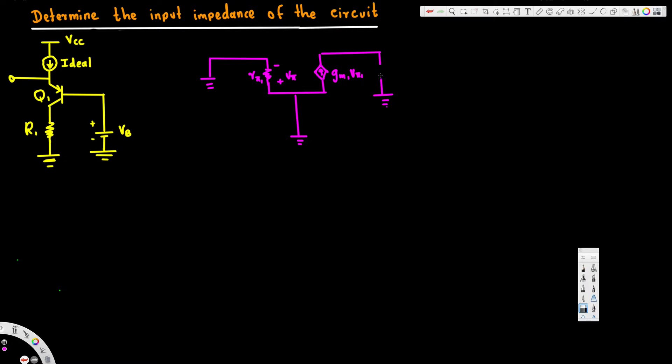And here we will have a resistor. This resistor will be r1, and the voltage here is vt.